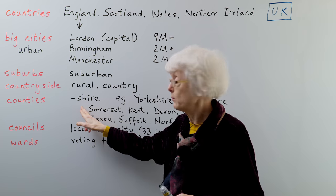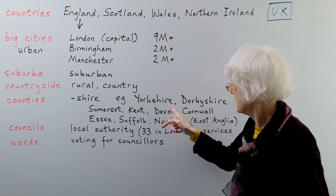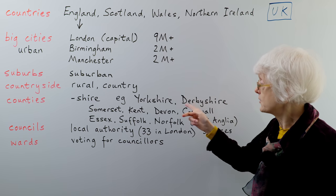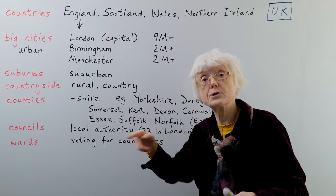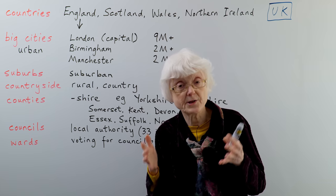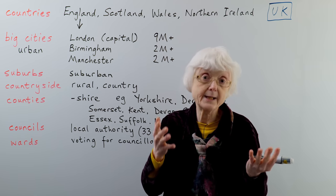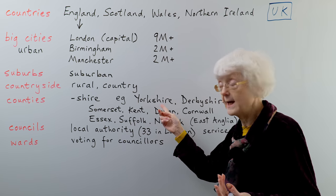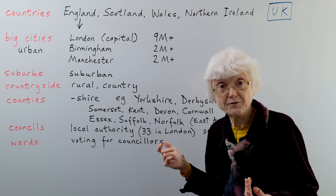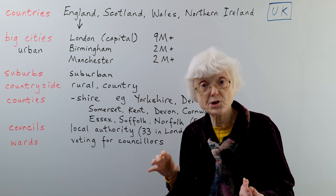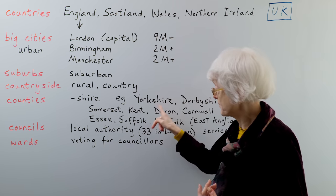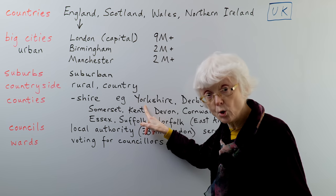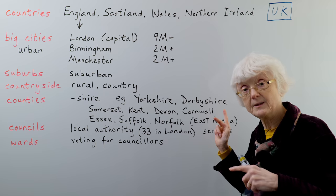Often county names end in the word 'shire.' Examples are Yorkshire and Derbyshire. If you say the word 'shire' on its own, because it is a word on its own meaning any county is a shire, it's pronounced 'shire.' But when it's added on the end of an actual county name, it's pronounced 'shire' — because the first part has more emphasis than the second. So it's Yorkshire, Derbyshire, like that.